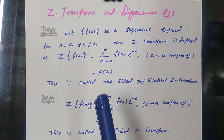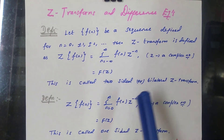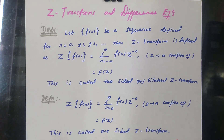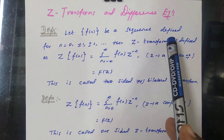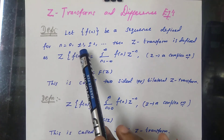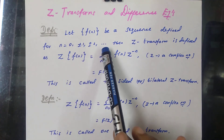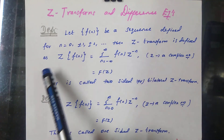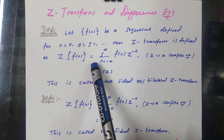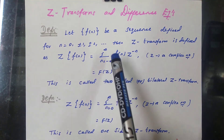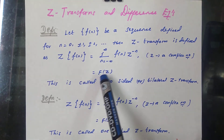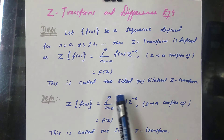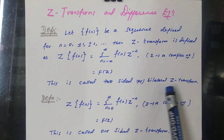Welcome to the lecture series on Z transforms and difference equations. This is the next topic we are going to cover. First, we can see the definition for Z transforms. Let f of n be a sequence defined for n equal to 0, plus or minus 1, plus or minus 2, etc. Then the Z transform is defined as Z of f of n equal to sigma from n equal to minus infinity to plus infinity of f of n times z to the power minus n, which equals a function of Z. This is called the two-sided or bilateral Z transform.